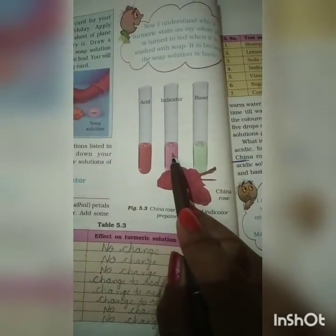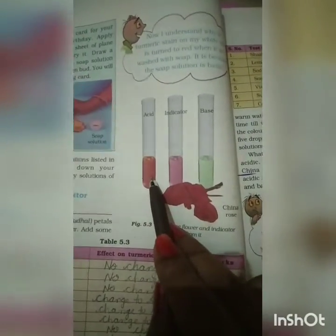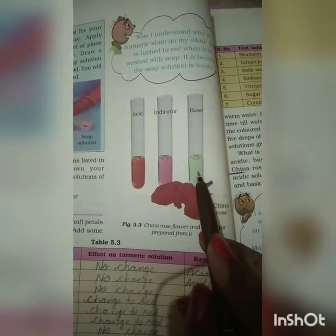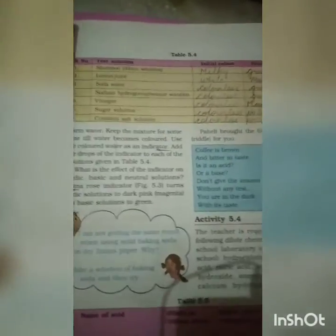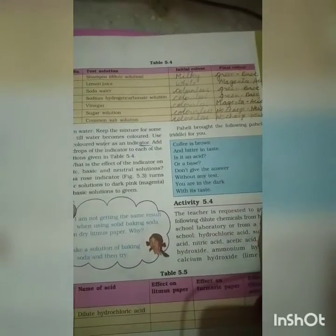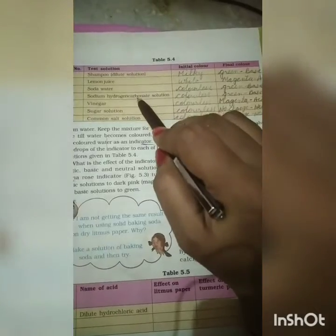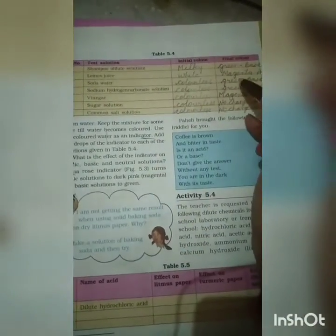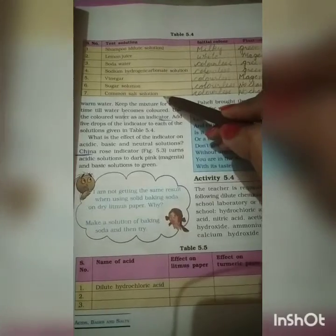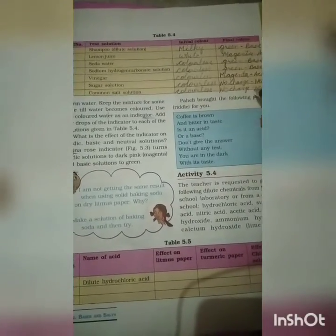When we use the China Rose indicator in an acidic solution, it turns to a dark pink — or magenta — color. When we use the China Rose indicator in a basic solution, it changes its color to green. In the table: shampoo turns green with China Rose indicator, meaning it is a base. Lemon juice changes to magenta, meaning it is acidic. Soda water and sodium hydrogen carbonate solution turn green, meaning they are basic. Vinegar changes to dark pink, meaning vinegar is acidic. Sugar solution and common salt solution don't change color, meaning they are neutral.